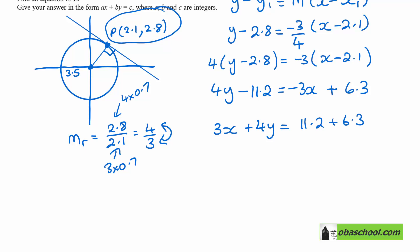3x plus 4y equals 17.5. If we double everything, 6x plus 8y equals 35.